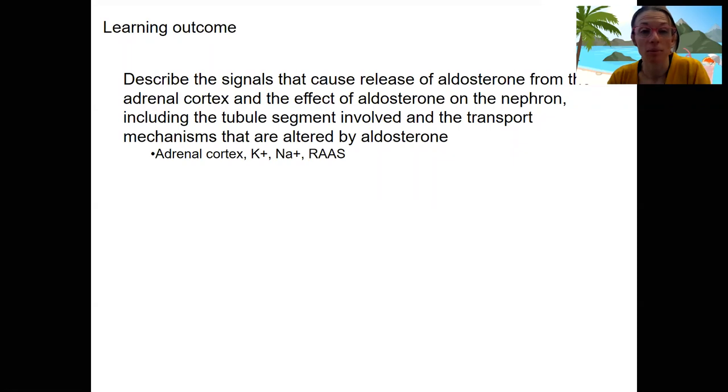And what we've done here is describe the signals that cause the release of aldosterone from the adrenal cortex and the effect of this aldosterone on the nephron, including where this is in the transport mechanisms.